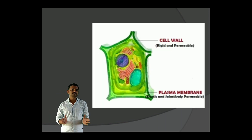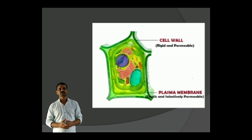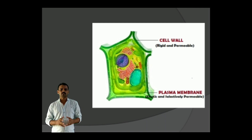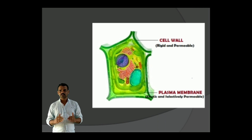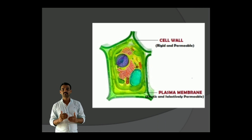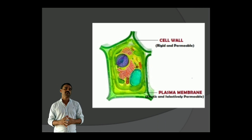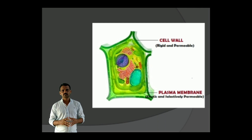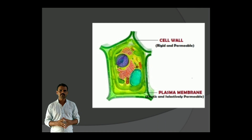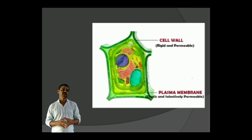As far as plant cells are concerned, the outermost wall — that is the cell wall — is rigid and permeable in nature. The Plasma membrane is the semi-permeable membrane and it is elastic in nature.